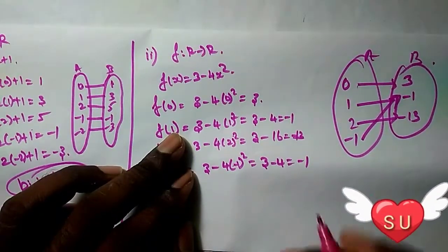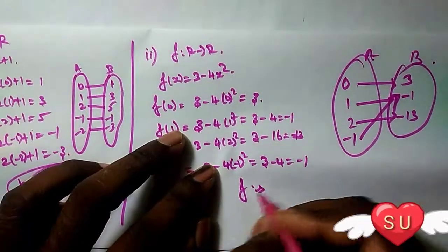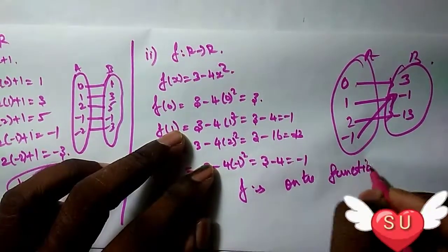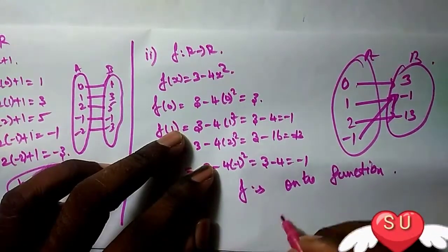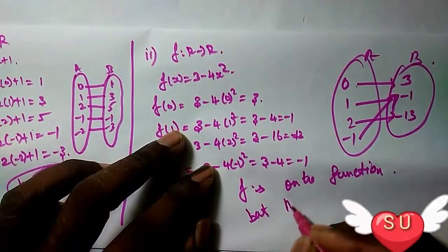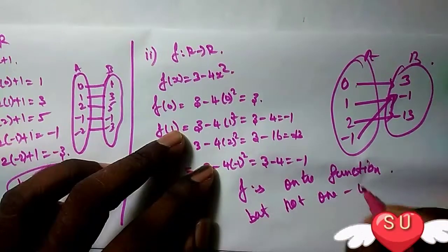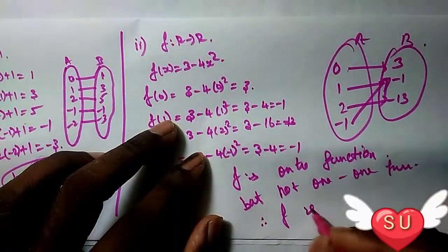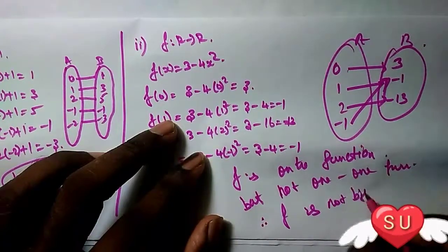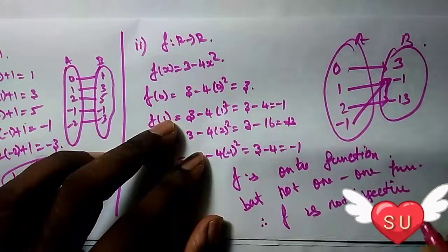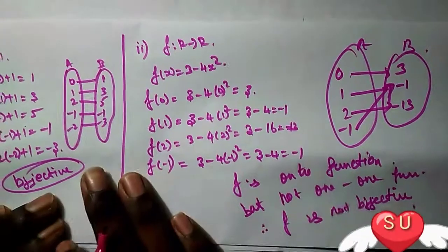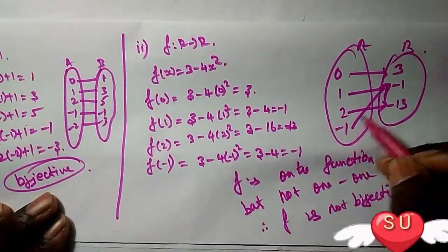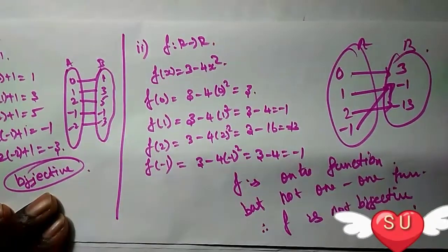Therefore, the function f is an onto function, but not a one-to-one function. The function is not bijective because 1 and -1 both map to -1. Okay friends, thank you.